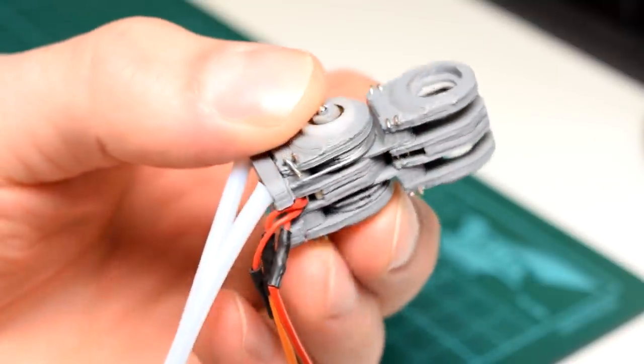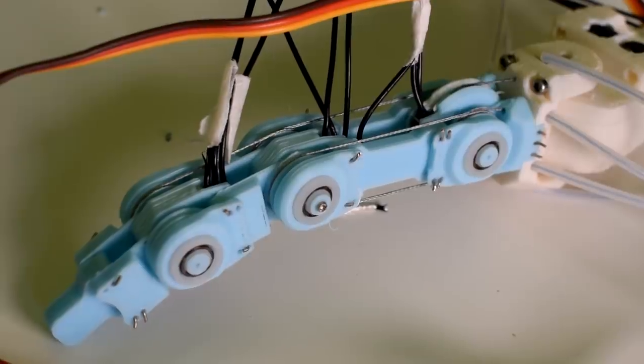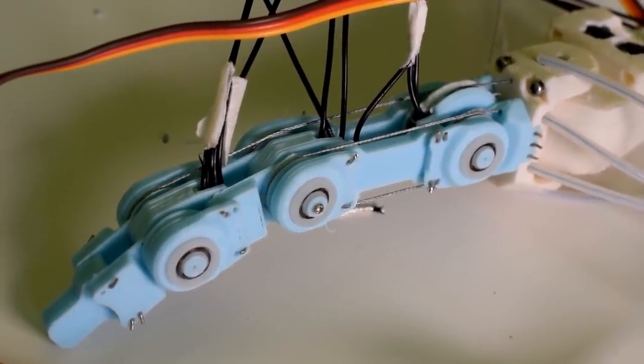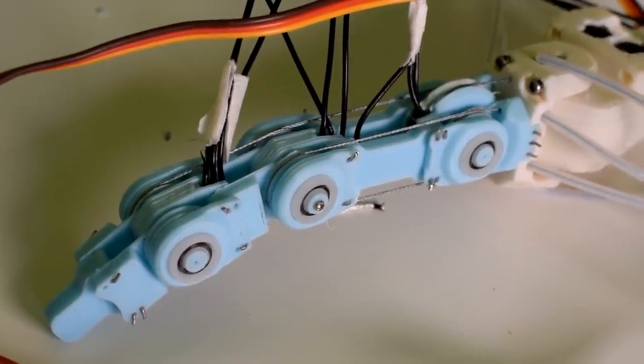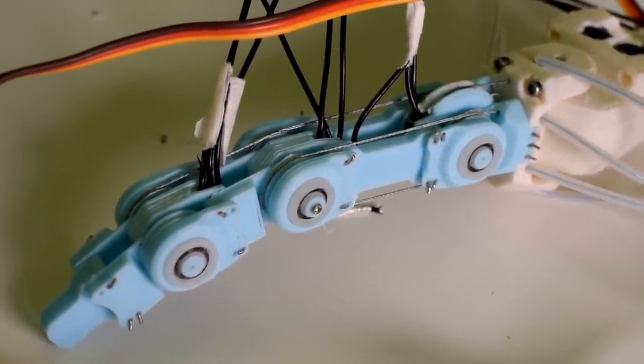And then the rest of the finger segments go together in the exact same way although it should be noted that the proximal phalanx which is the first finger segment has bearings and potentiometers on both ends so it's like a double ended segment.